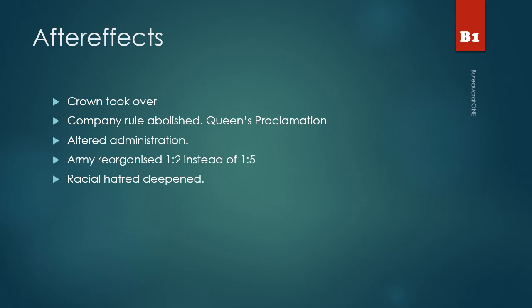Finally, the after effects of the revolt of 1857. The Crown took over rule from the East India Company; the company rule was abolished under Queen's Proclamation. The British also altered the administration of India and reorganized the army — now in a 1:2 ratio instead of 1:5, that is one battalion of British troops for every two battalions of Indian troops. Racial hatred deepened among Indian troops, with the British calling sections of troops that supported them during the revolt 'martial races.' The British also refrained from recruiting soldiers from the Awadh region and instead recruited soldiers from the Punjab region and also the Gurkhas.